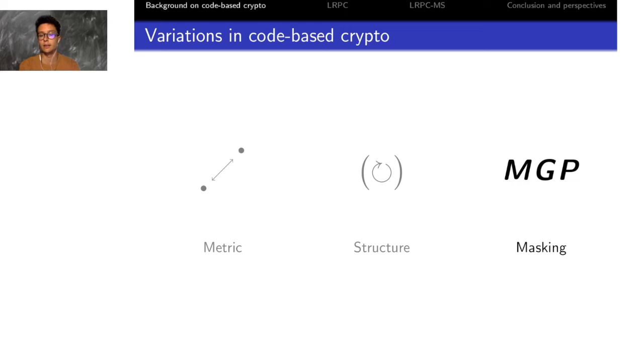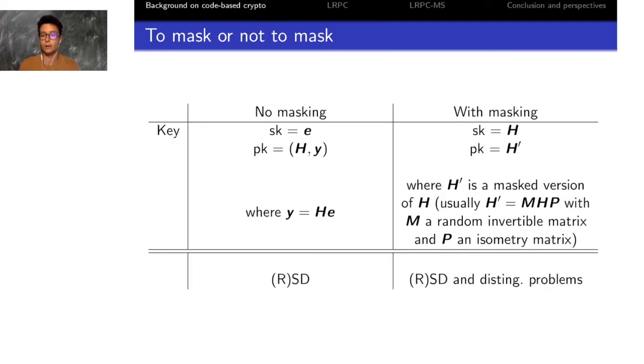Apart from the structure, we can also choose to design a cryptosystem with masking. I will go very quickly over the details here because it is not the central point of our speech, but the scheme which has masking has a public key H' which is a parity check matrix, which is a masked version of a parity check matrix H which allows for efficient decoding.